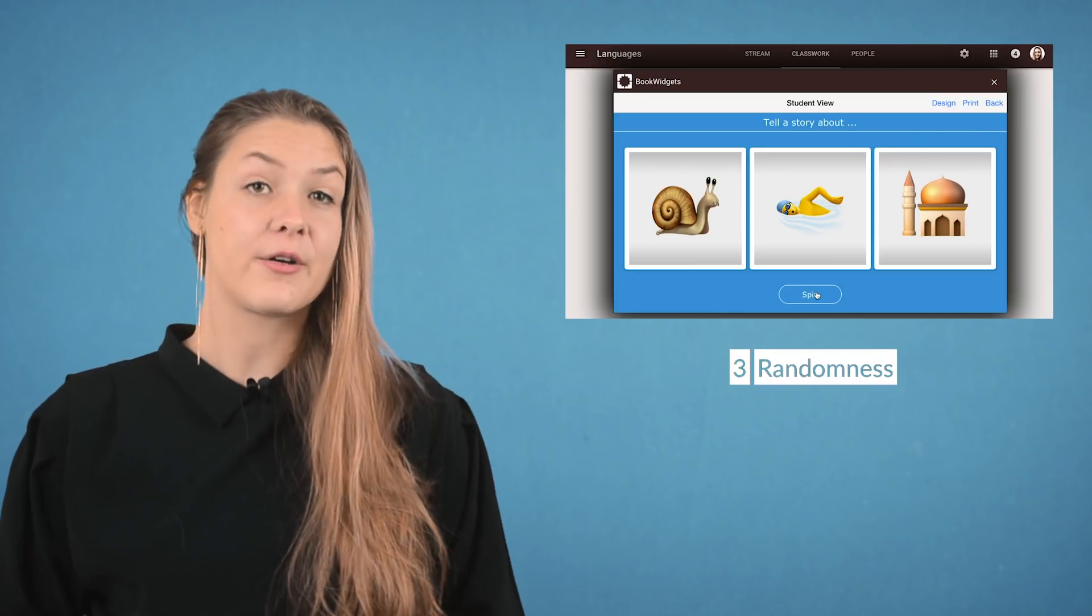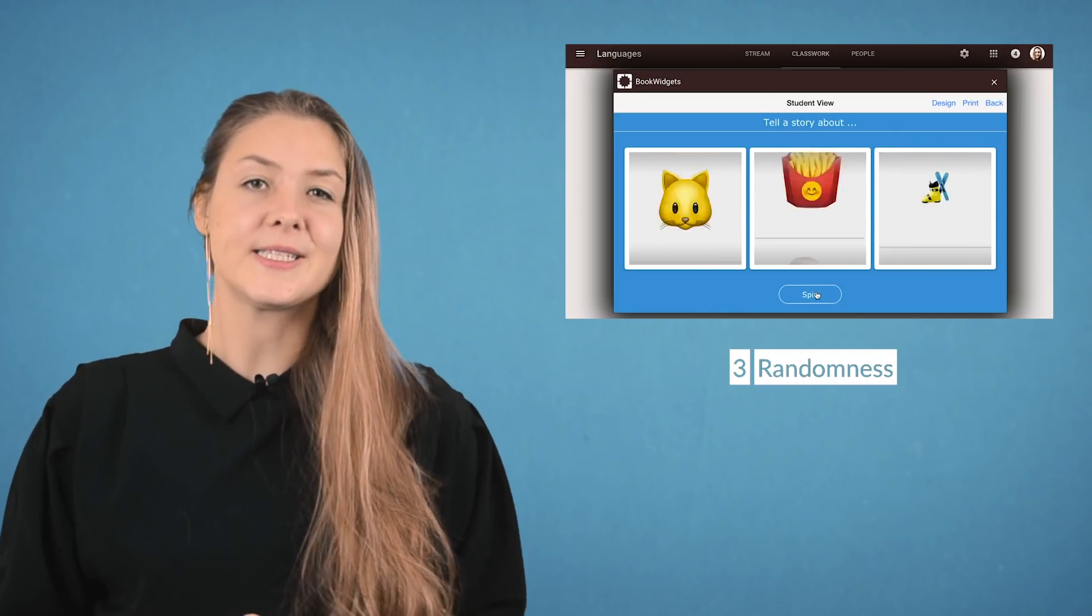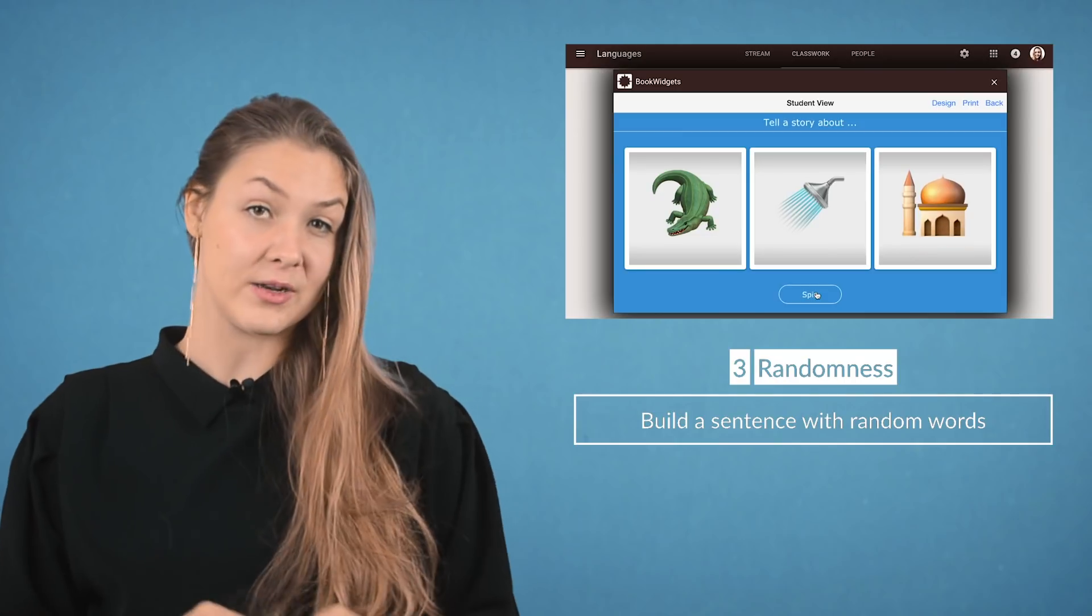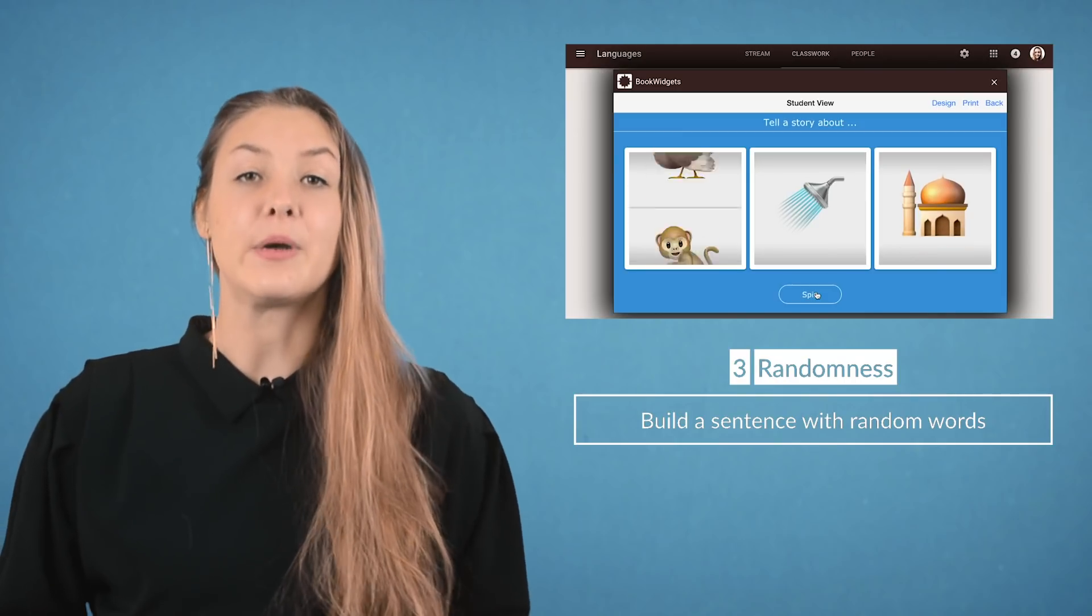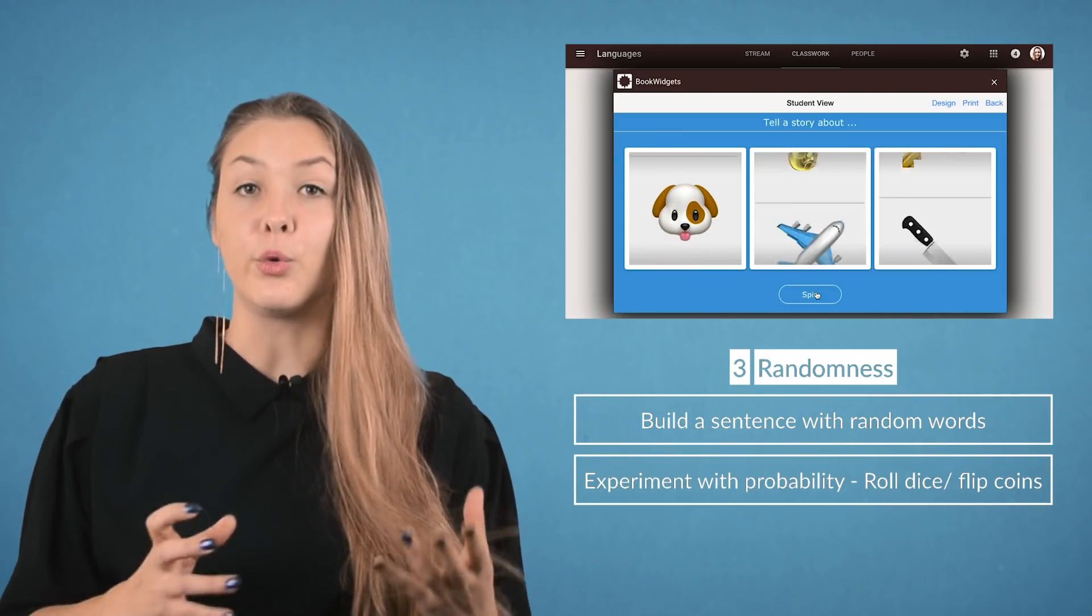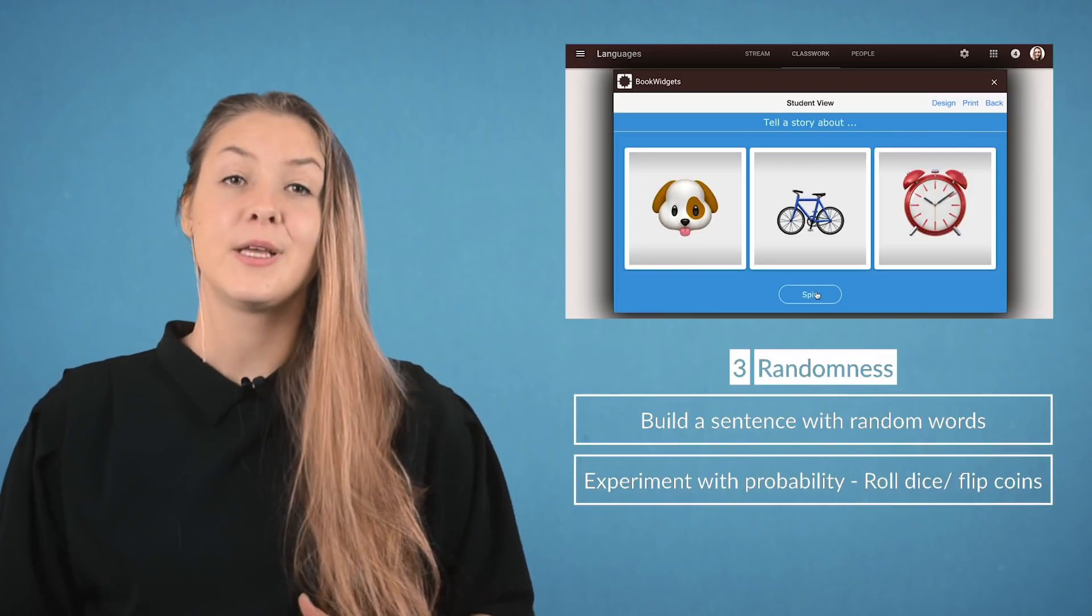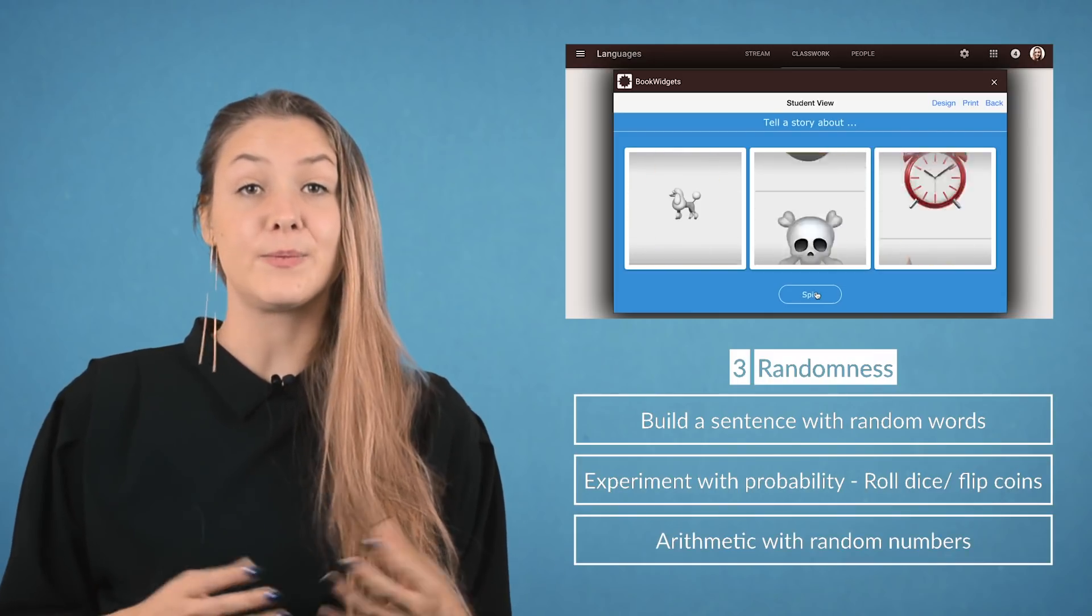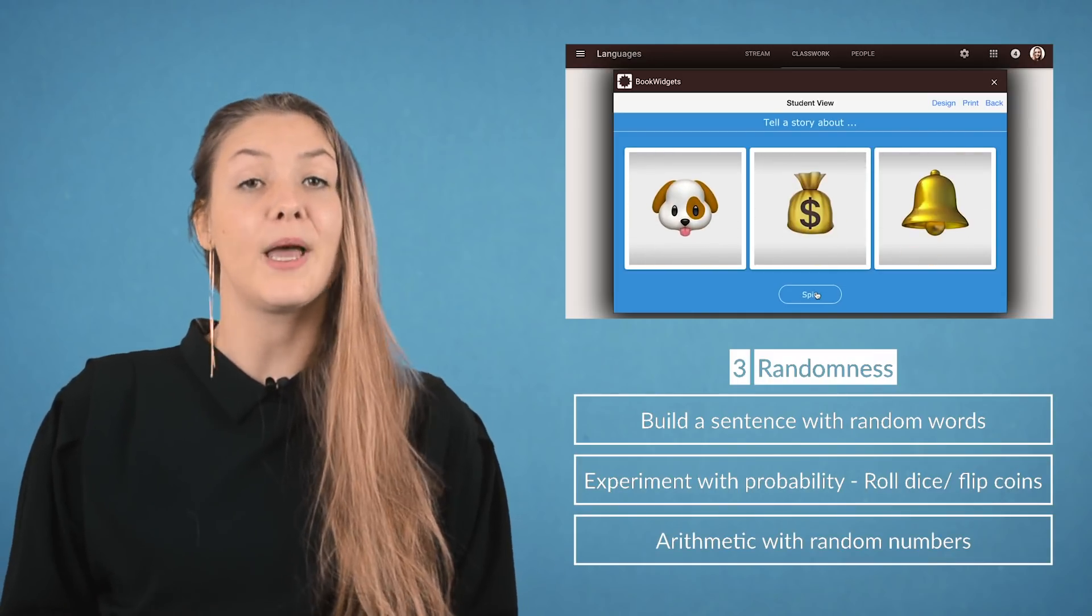Other possibilities are: Let students build a correct sentence with words given by the randomness widget. Do experiments around probabilities. Roll the dice or flip coins. Add numbers to the wheels. Spin the wheel and let students multiply, divide, subtract, or add numbers.